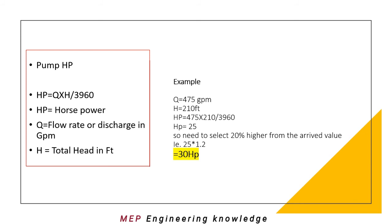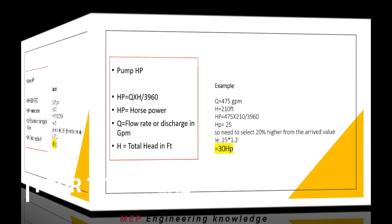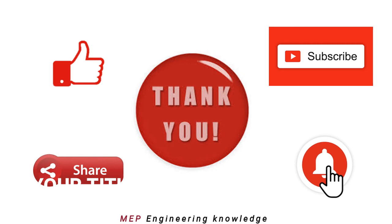This is a basic thumb rule calculation to check any parameters or details in the building. If you want precise details, you can run a hydraulic calculation — there is separate software available with the OEM. By knowing these calculations, we can cross-check the capacity of the pump and tank. Thank you for watching this video. Please do share with your colleagues so that everybody will be aware of the fire hydrant system.